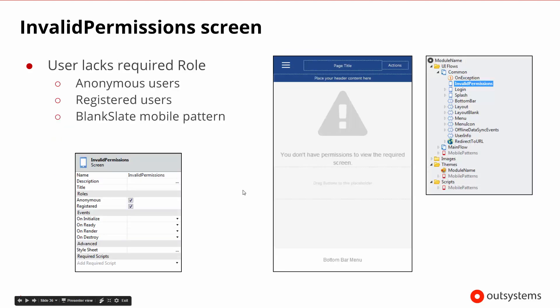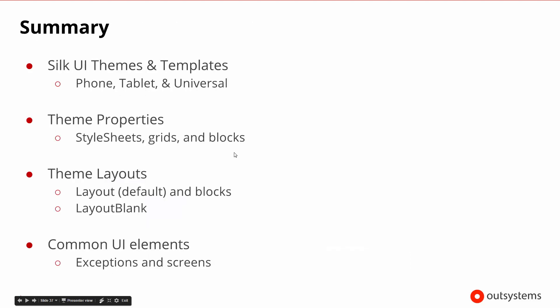Finally, the invalid permission screen just shows a blank slate saying you tried to get to something and you are either a registered user or an anonymous user who can't get to that information.